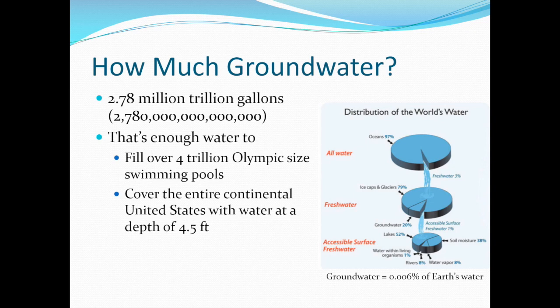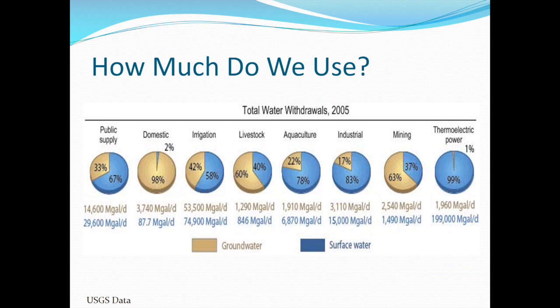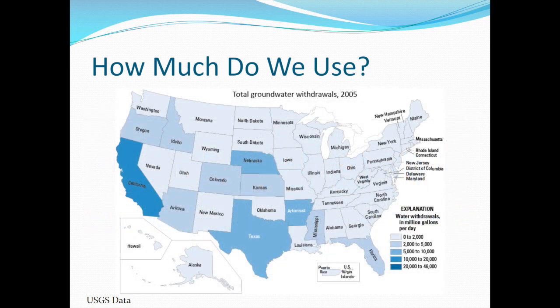But not all groundwater is accessible. So how much groundwater do we actually use? According to USGS data from 2005, groundwater is a large component of the water used for domestic, irrigation, livestock, and mining purposes. Some states withdraw more groundwater than others, but as of 2005, the majority of states are within the 0 to 2,000 million gallons per day range.